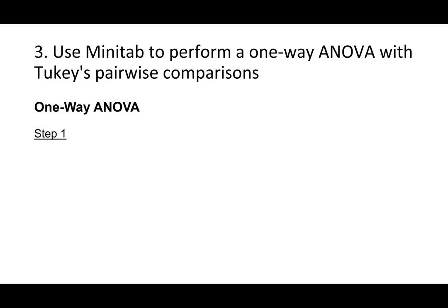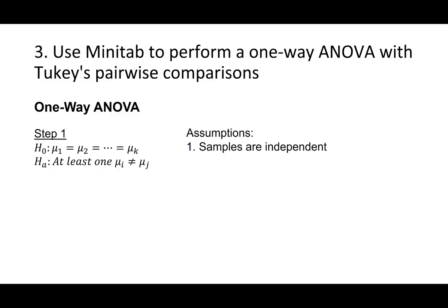We'll start with a one-way ANOVA. Step 1 is to write hypotheses and check assumptions. With a one-way ANOVA, we're comparing the means of three or more groups. The null hypothesis is that the means are all equal: mu for group 1 equals mu for group 2, all the way through mu for group k, where k is the number of groups. The alternative hypothesis is that at least one pair of population means is not equal. There are three assumptions. First, the samples are independent — there are different cases in each group that are in no way matched or paired.